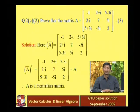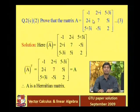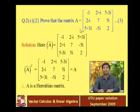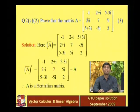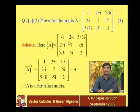We are proving the given matrix is Hermitian, so first we find its conjugate. This is a 3×3 matrix with some complex and some real entries. The real numbers on the diagonal — minus 1, 7, 2 — stay the same. The complex entry 2 + i becomes 2 minus i, and 5 minus 3i becomes 5 + 3i, and so on.